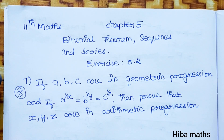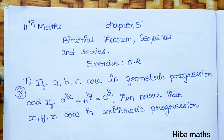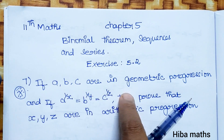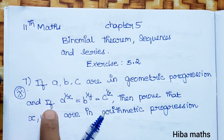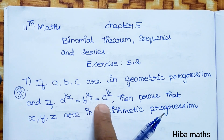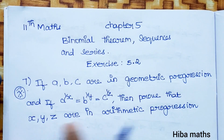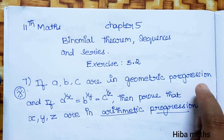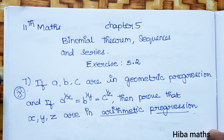Hello students, welcome to Hiba Max 11th standard. Chapter 5: Binomial Theorem, Sequences and Series, Exercise 5.2, 7th question, episode 100. In this video, we will solve: if a, b, c are in geometric progression and if a power 1/x is equal to b power 1/y is equal to c power 1/z, then prove that x, y, z are in arithmetic progression.